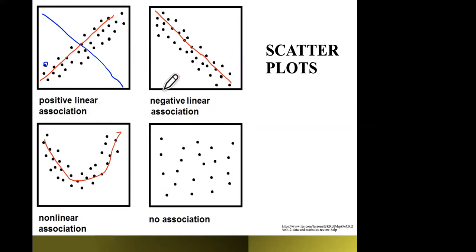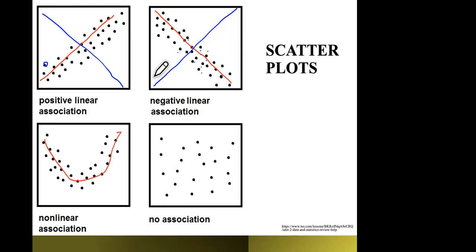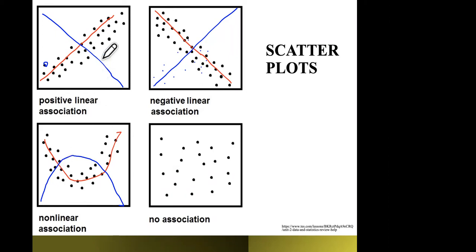For the negative relationship, a poorly drawn line won't fit the data — data points fall closer to the correct regression line. Similarly, for a nonlinear (exponential) relationship, a straight line doesn't fit correctly. Some points may fall near it, but it's not the best predictor. The regression line must be the one that best represents the data's behavior in order to make reliable predictions.